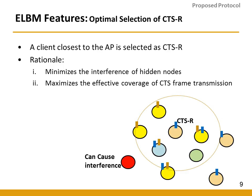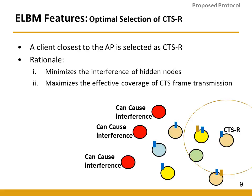The first feature is that the client closest to the AP is selected as CTSR. The reason is twofold: it minimizes interference from hidden nodes, and it maximizes the effective coverage of the CTS frame. For example, choosing one client as CTSR results in only one station that can cause interference, while choosing another client may result in three stations causing interference. Thus, CTSR selection can increase or decrease the number of interfering stations. The distance from the AP is calculated using time of arrival or RSSI-based techniques.